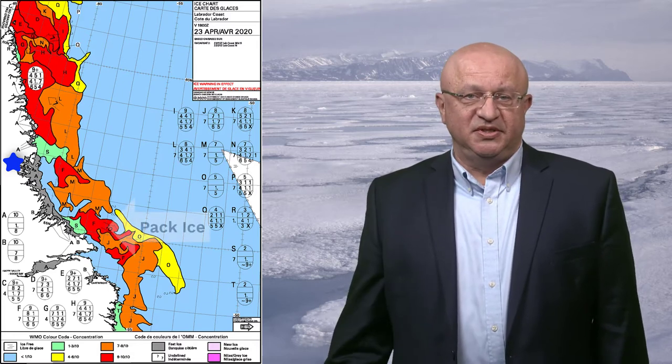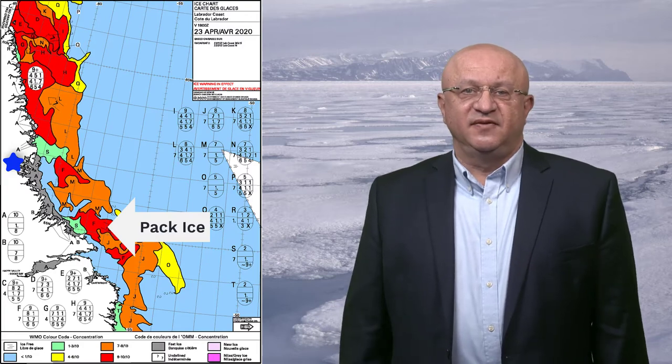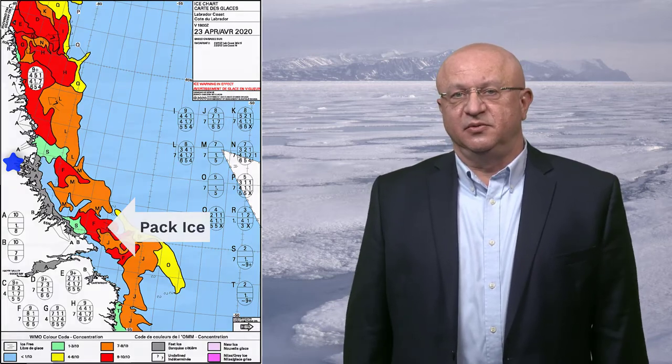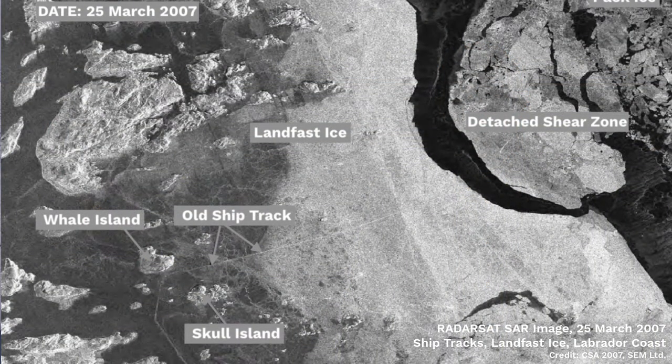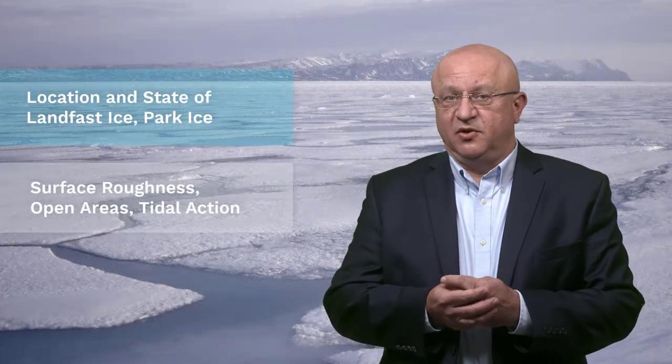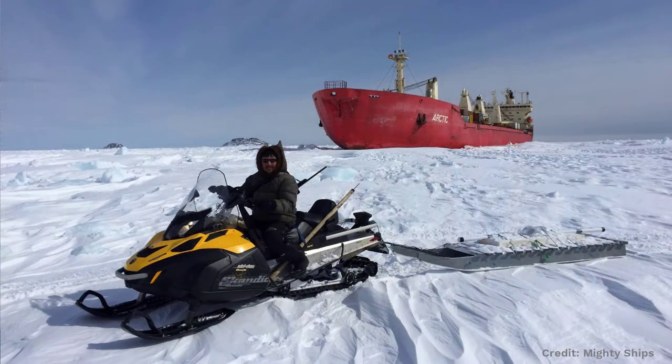Beyond the land-fast ice is an area of mobile pack ice that drifts southward from waters further north. Any vessel proceeding to the mine relies on ice information to inform themselves about the ice conditions along the route. The type of pack ice and location of the land-fast ice edge is important to the community and the mariners as well. The community is interested in the location and state of the ice, the surface roughness, and the location of any areas that have not frozen over because of tidal action. The people travelling on the ice must be aware of the route and timing of the ship, so that they don't encounter a new broken ship track.